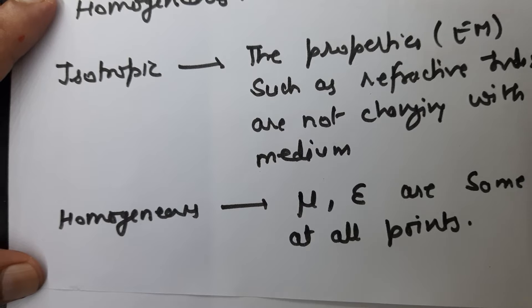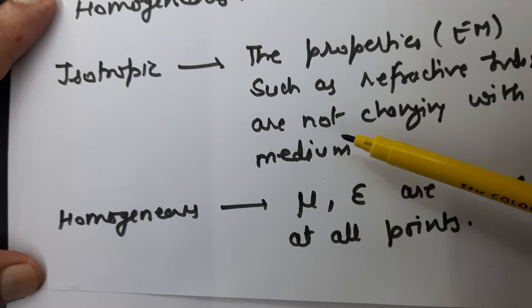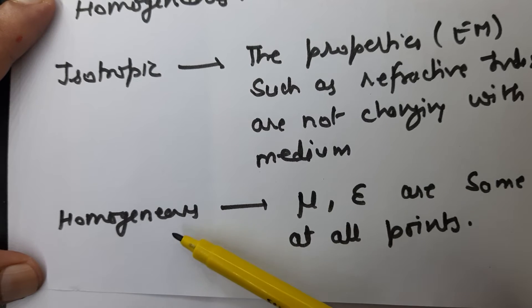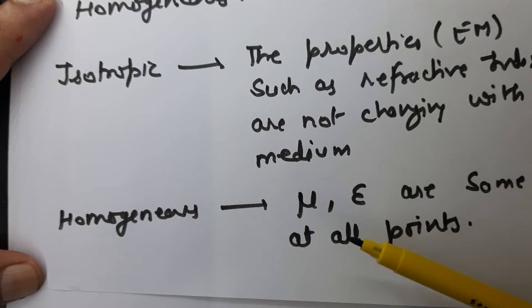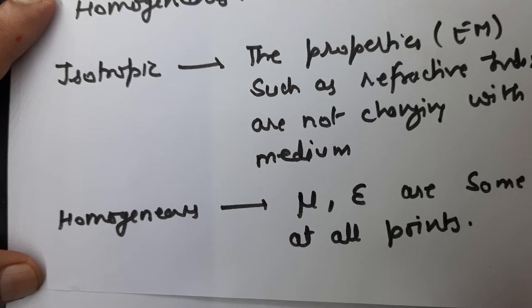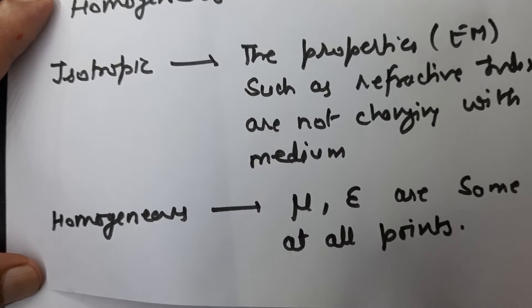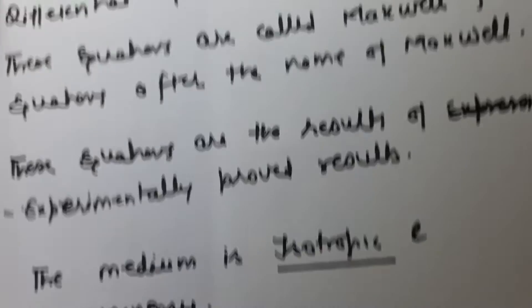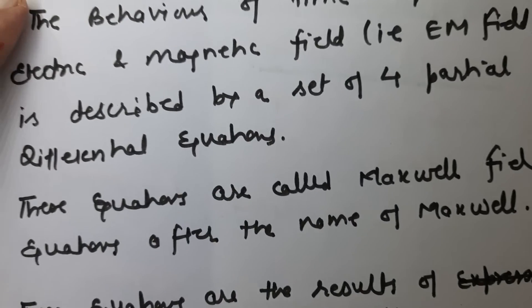When we say isotropic, we mean that properties such as refractive index are not changing with direction. And when we say homogeneous, it means the electromagnetic properties such as permeability and dielectric constant are the same at all points. We will now change the slide and in the second slide, we are going to discuss these Maxwell equations one by one.